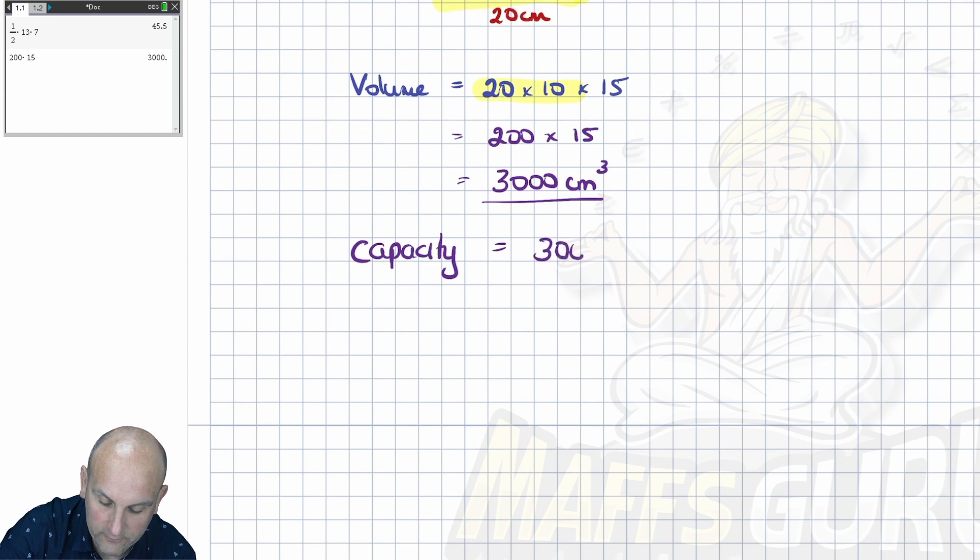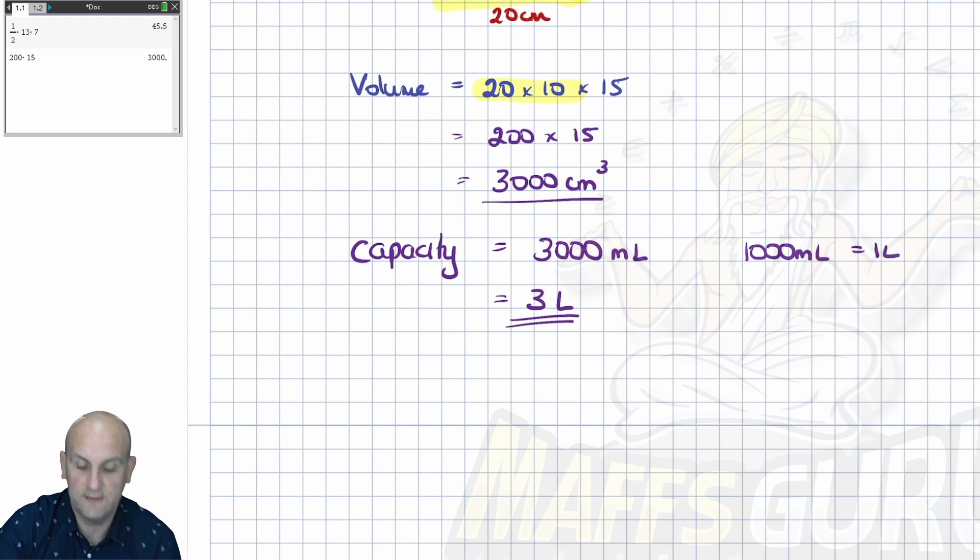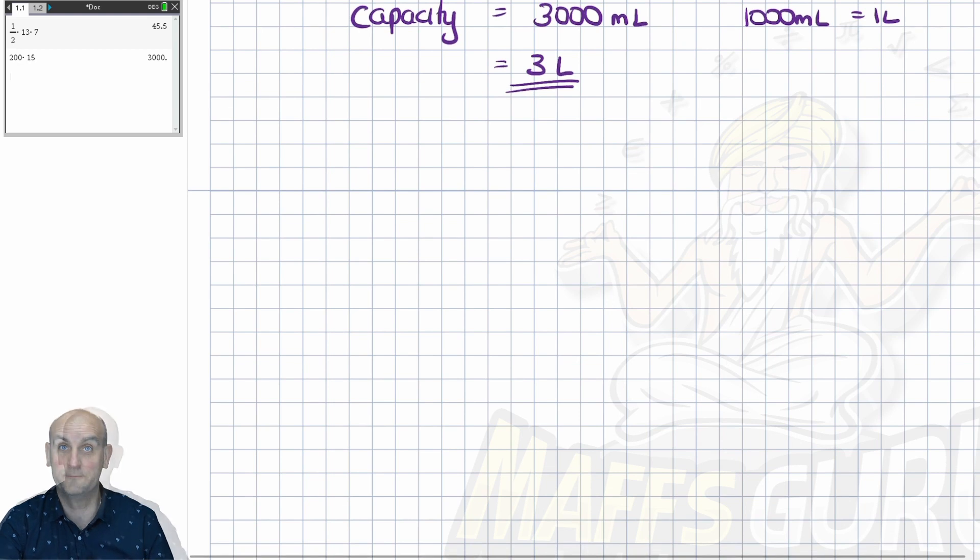And we've got to try and remember, because it wants it in liters. So, one centimeter cubed is one milliliter. So, I now know that my capacity is equal to 3,000 milliliters. And then, what do we know? We know that there are 1,000 milliliters is one liter. So, if I now divide that by 1,000, I get 3 liters. So, we always, as I've said before, always have to work out the volume first, in centimeters cubed, meters cubed, whatever else. And then, we use our conversions to help us do it.